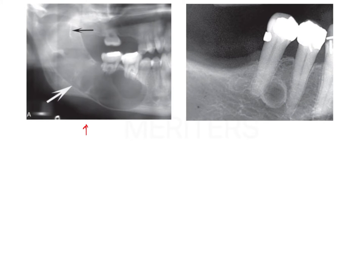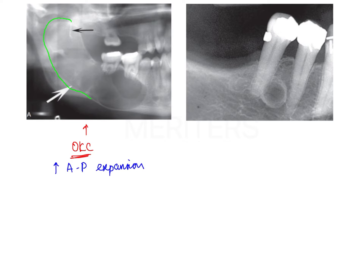The next odontogenic cyst is the odontogenic keratocyst (OKC). Its most important feature is greater anteroposterior expansion with lesser buccolingual expansion. Here you can observe a well-defined corticated radiolucent lesion involving the entire body of the mandible extending to the entire ramus. It is multilocular, with septa within the radiolucent lesion giving it a multilocular appearance.